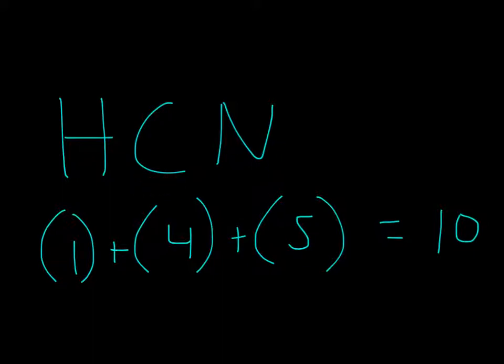Because, for example, for carbon, carbon is in group 4, so therefore it would have 4. Nitrogen is in group 5, so it would have 5. Now you add those up, and you get 10.